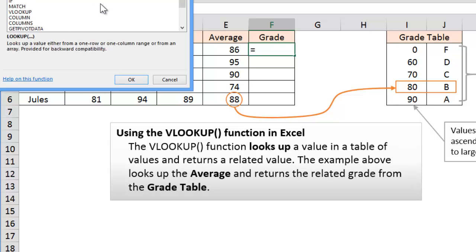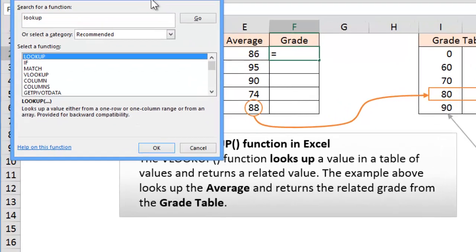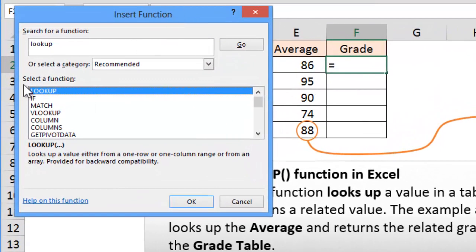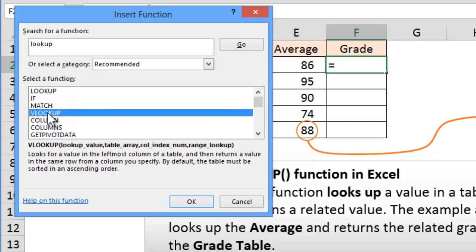There are a number of lookup functions but let's just type in lookup. Hit enter and you will notice that we get lookup. Let me move that down so we can see it. We get the lookup, the if, and the match. The VLOOKUP is the one we want to use. This V stands for Vertical Lookup. So let's click OK.